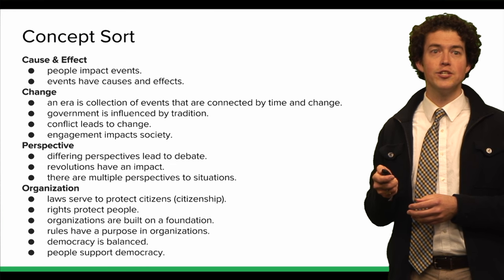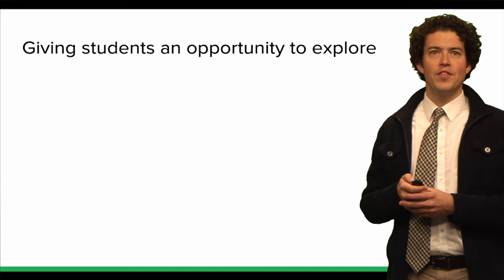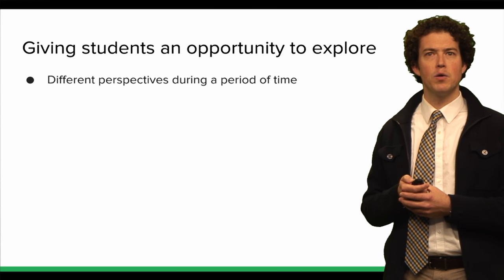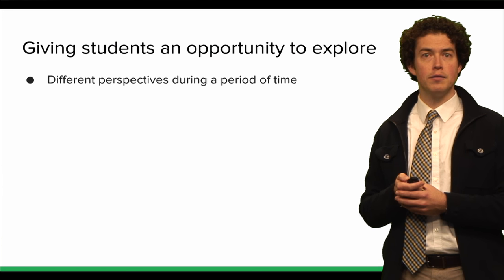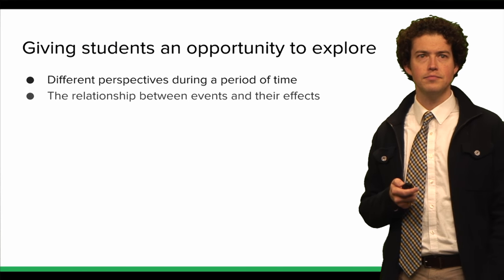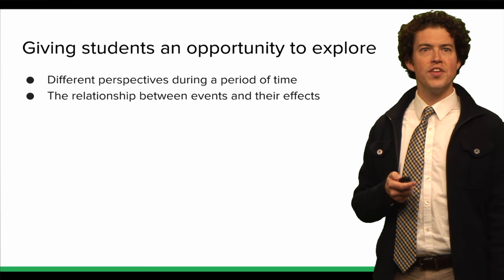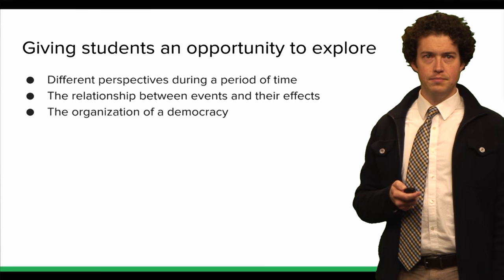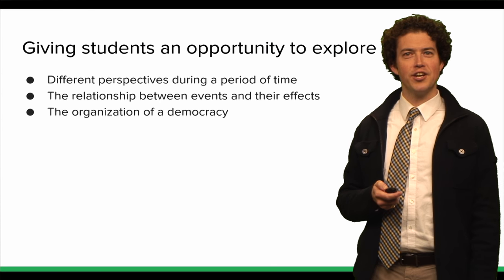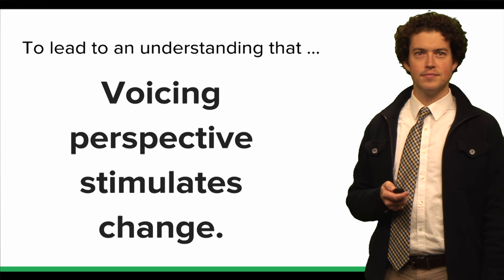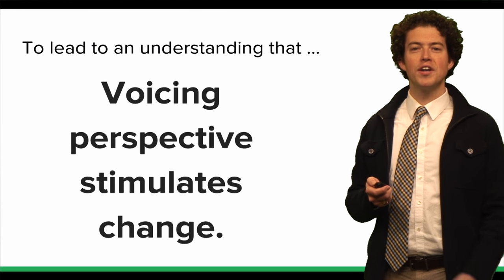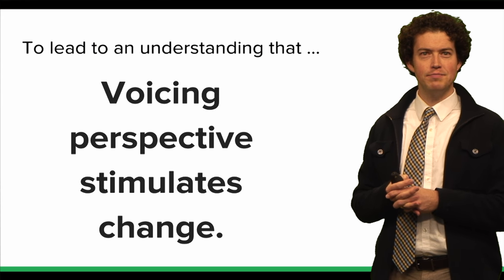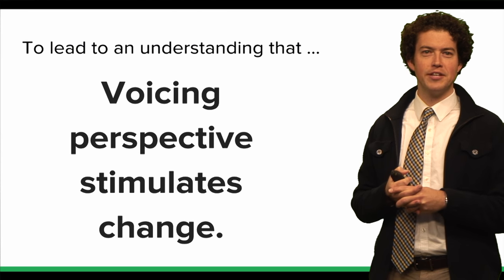To be able to dig into those ideas, they identified three areas that they wanted to give students the opportunity to explore: different perspectives during a specific period of time, the relationship between events and their effects, and the organization of a democracy. By doing that, they wanted students to understand a really big idea — what Wiggins and McTighe might call an enduring understanding — that voicing perspective stimulates change.